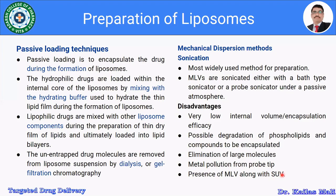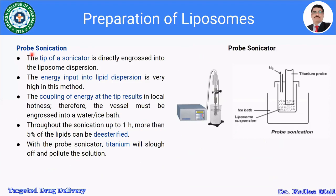In probe sonication, this is the probe sonicator — the probe is made of titanium. The prepared liposome suspension is placed in a beaker and the equipment is operated for a specific time period to reduce the size of the multilamellar vesicle. The tip of the sonicator is directly immersed into the liposomal dispersion; energy input is very high due to the probe. The vessel must be immersed in a water or ice bath to maintain the temperature, with nitrogen gas atmosphere.